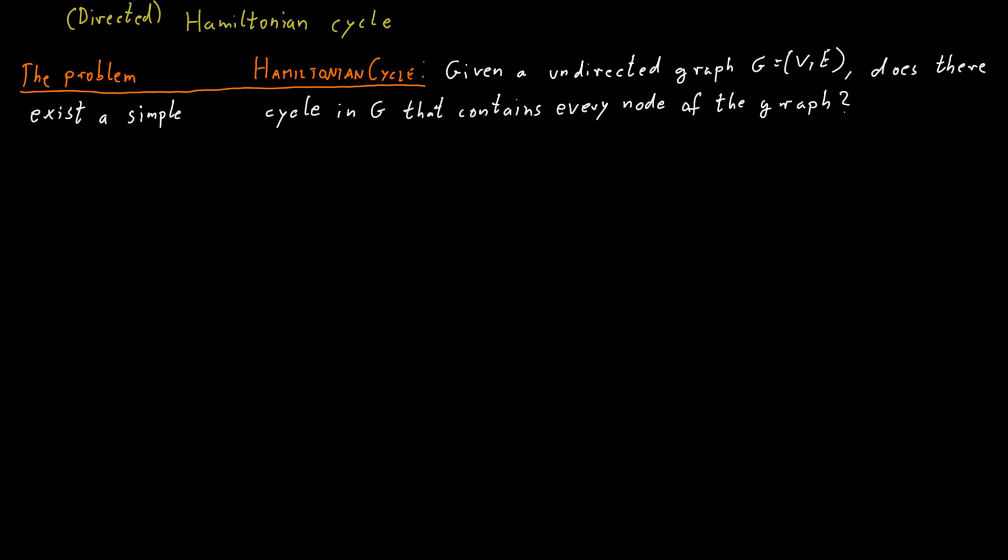A slightly different problem is the problem of directed Hamiltonian cycle. It has exactly the same definition, except that we now have a directed graph, a digraph, instead of an undirected graph.